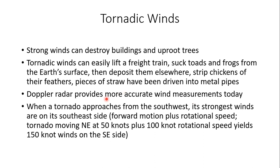Doppler radar is the greatest tool we have, providing more accurate wind measurements through velocity profiles. When a tornado approaches from the southwest, its strongest winds are on the southeast side because you add forward motion plus rotational speed. For example, a tornado moving northeast at 50 knots plus 100-knot rotational speeds yields 150-knot winds on that southeastern side — a true double whammy.